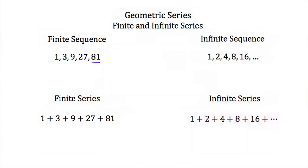If we have an infinite sequence, like 1, 2, 4, 8, 16..., notice there are three periods after the last term, meaning the sequence goes on forever. The pattern is multiplying by 2 each time — from 1 to 2, 2 to 4, 4 to 8, 8 to 16 — and those three periods mean there's another term after 16: 32, then 64, and so on until we hit infinity.